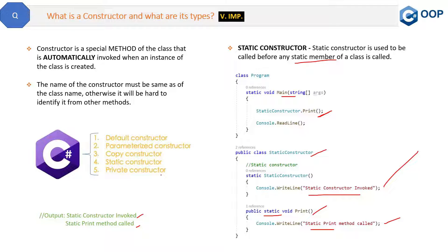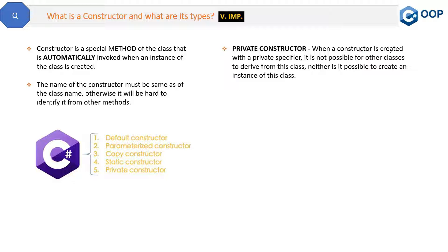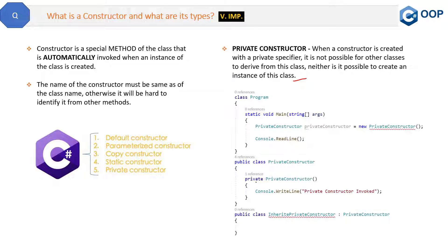Our next type is the private constructor. When a constructor is created with a private specifier, it is not possible for other classes to derive from this class, nor is it possible to create an instance of this class. If you try to create an object of the private constructor class, it will show a compile-time error, and if you try to inherit from it, that will also throw a compile-time error.